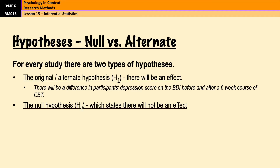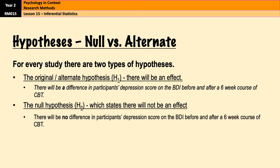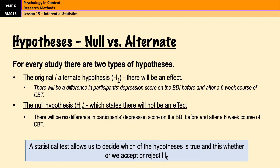There is also the null hypothesis — the second hypothesis that every researcher has for their piece of research. The null hypothesis states that there will not be an effect. So effectively it looks like this: there will be no difference in participants' depression scores on the BDI before and after a six-week course of CBT. It effectively says that I'm not going to find anything. This is important because a statistical test allows us to decide which of these hypotheses is true — whether we accept or reject the null hypothesis.